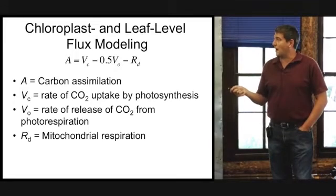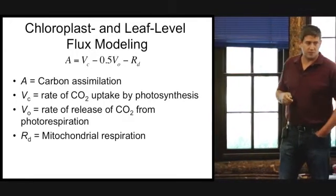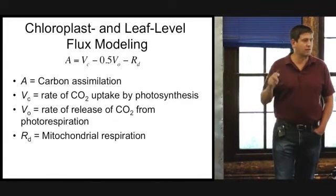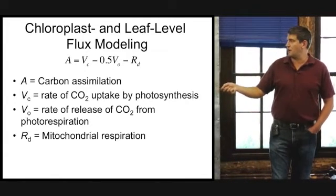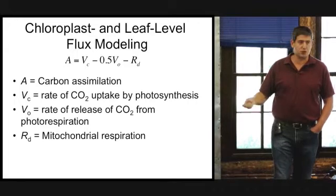So if you look at the Farquhar model in its most simple form, that's your net carbon assimilation. So this A represents the flux of carbon dioxide between the leaf and the atmosphere. There's going to be a function of VC, so that's the rate of CO2 uptake by photosynthesis.